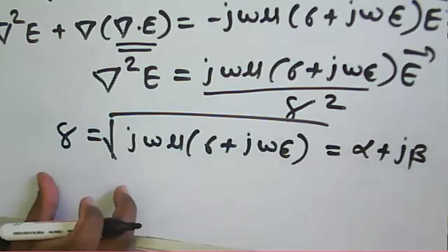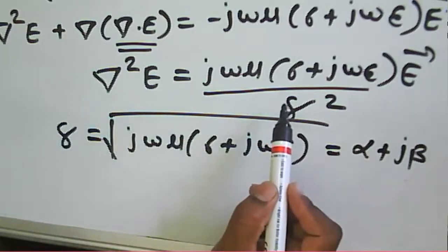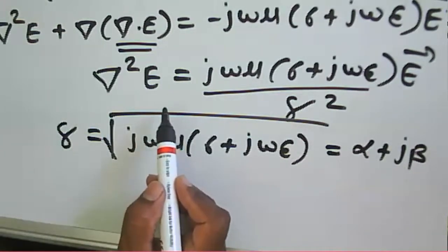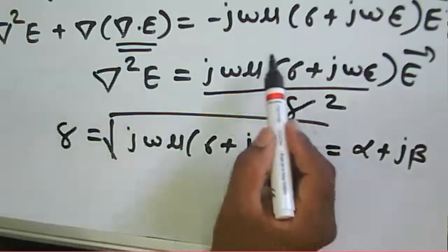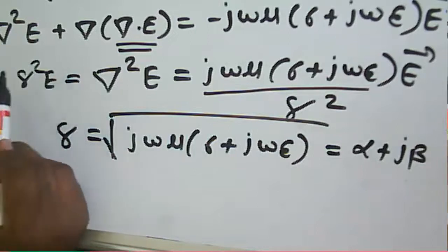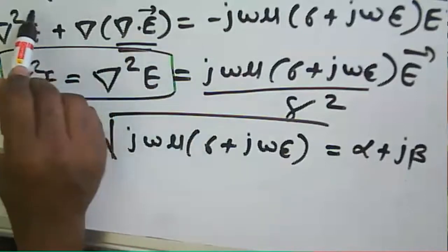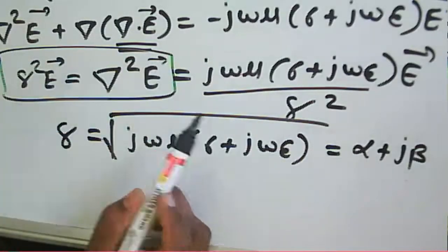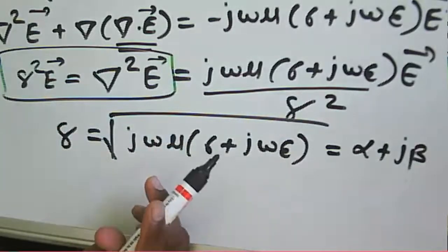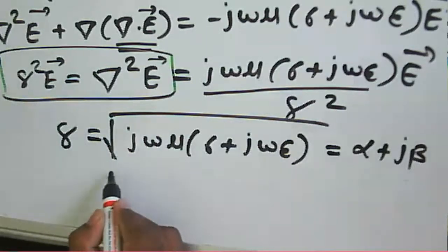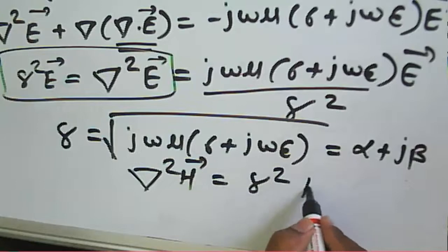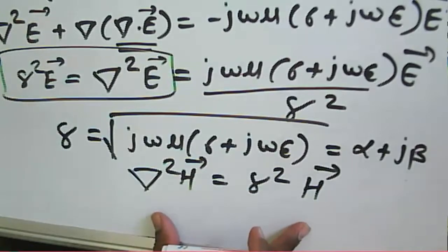As your wave propagates in space it has attenuation α and phase constant β. This is the wave equation written in terms of electric field: del²E equals γ²E. Similarly, the wave equation in terms of magnetic field is del²H equals γ²H. Both E and H here are vectors.